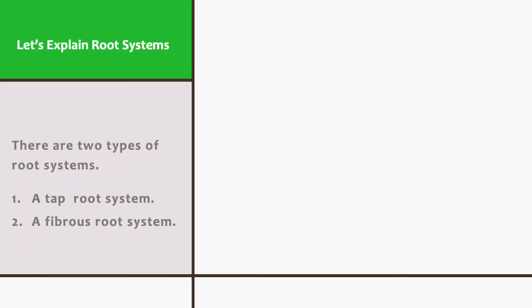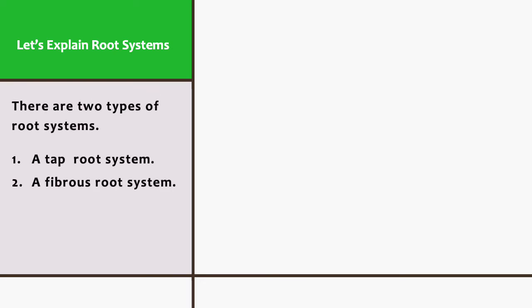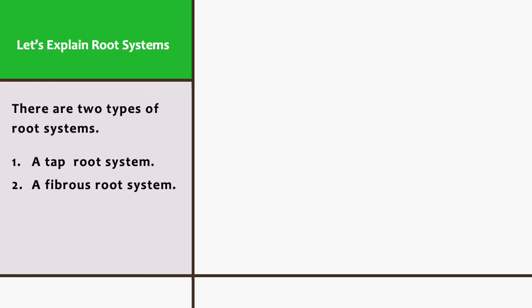Let us now explain root systems. There are two types of root systems: one, a tap root system, and two, a fibrous root system.